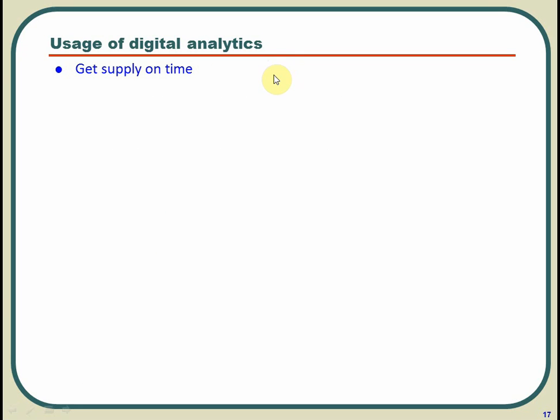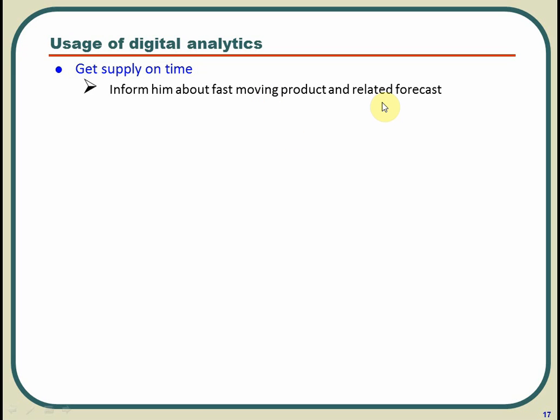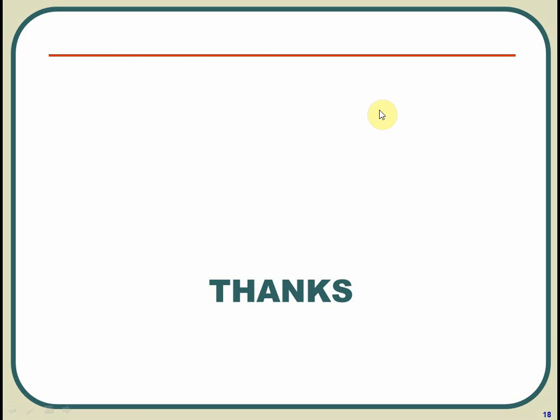You help suppliers supply on time by informing them well in advance based on forecasts that certain products are fast-moving, so they can prepare their processes better. So to summarize what you have learned: what digital analytics is all about, what it tries to answer, what the purpose of digital analytics is, and you saw some examples. You may think of subscribing to this channel to get new updates. Thanks.